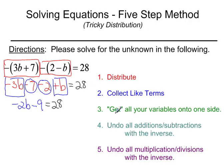Here, where it says get all of your variables on the one side, we don't need to. The only variable is a b, and it already is on one side, the left side here. So, then we're going to look to undo all additions and subtractions. I have a minus 9, so I'll add 9 to both sides. And then that's going to give me negative 2b equals 28 plus 9 is 37.